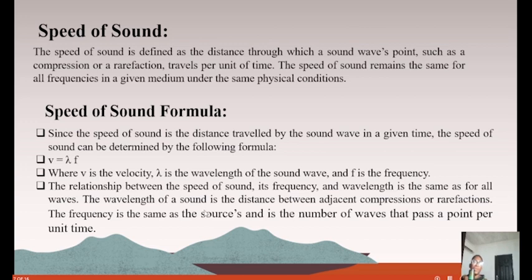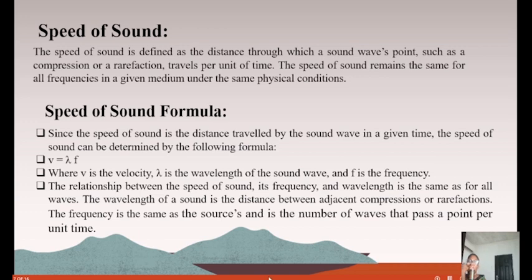For sound waves, the wavelength is the distance between adjacent compressions or rarefactions. Compressions are places of higher pressure; rarefactions are places of lower pressure. For transverse waves it was the distance between two successive crests or troughs, but for longitudinal waves like sound it is between adjacent compressions or rarefactions. The frequency is the number of waves that pass a point per unit time — oscillations per second — and the period is just the time for one cycle.